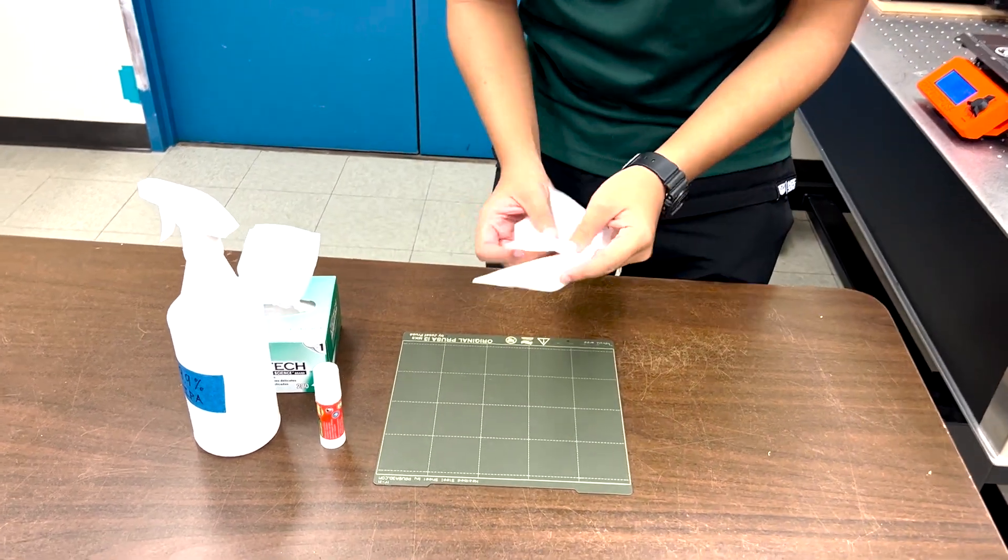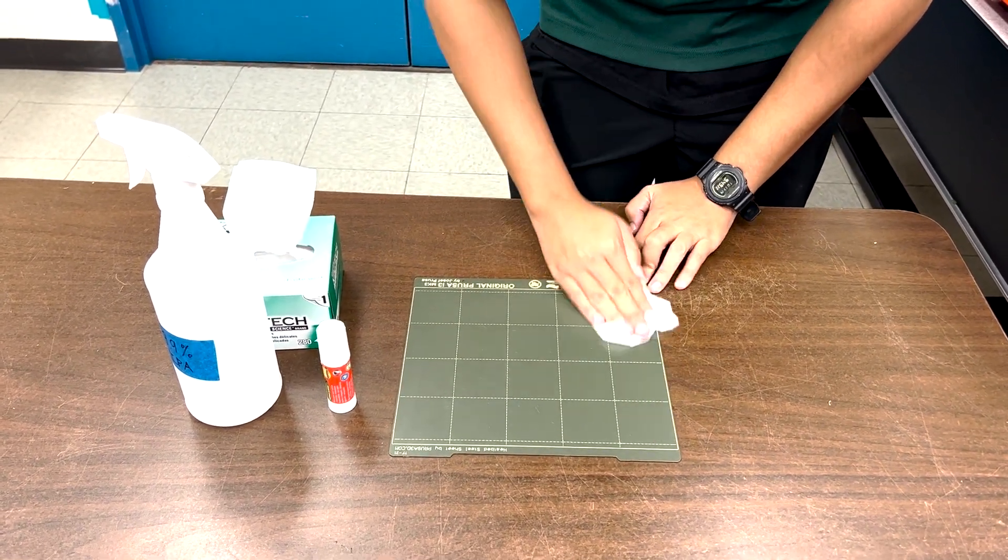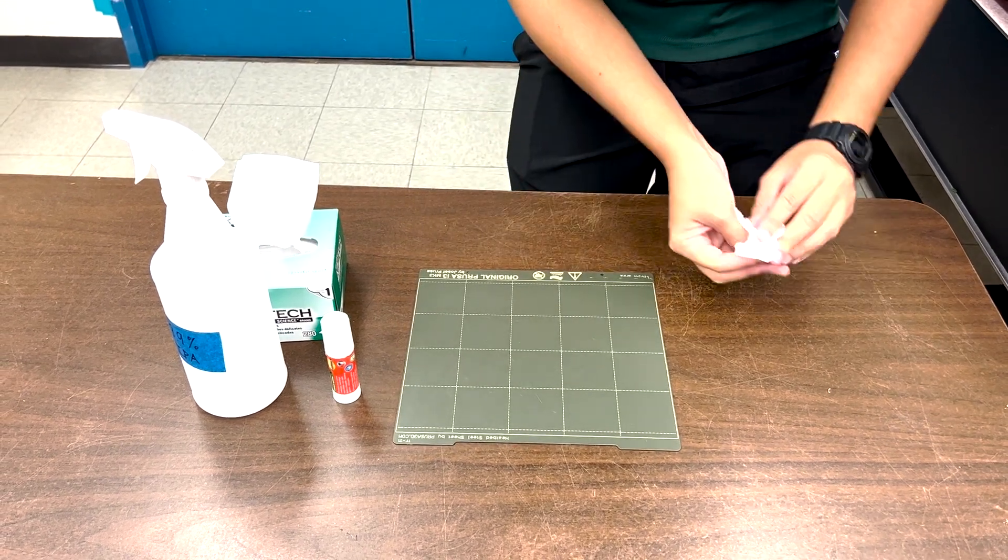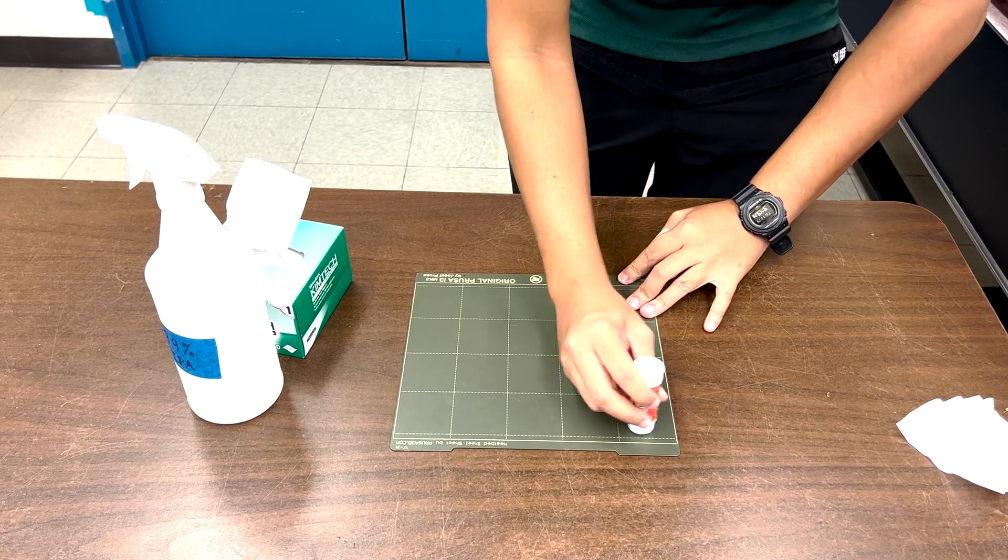With the Chemtech wipe, wipe any debris off of the build plate. Then with the glue stick, apply the adhesive in an S-like pattern.